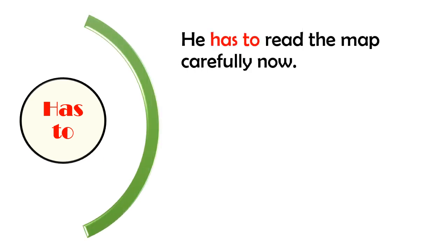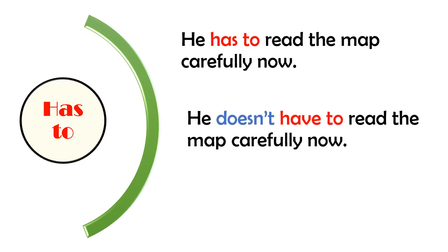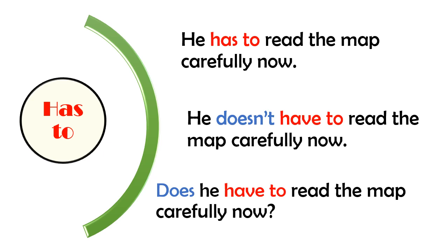How about has to, my student? Okay. I think you remember very well. Has to goes with he, she and it. Okay. More examples. Look. He has to read the map carefully now. Right? And he doesn't have to read the map carefully now. Doesn't before have to. Remember, written have to. And the question: Does he have to read the map carefully now? Okay. In the question, you use does before he. And after that, have to. Okay. Now, can you make example by yourself? I can hear you.